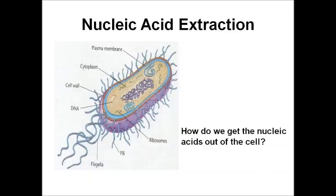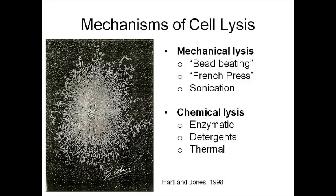Looking at each step in more detail, we start with nucleic acid extraction. The key question is: how do we get nucleic acids out of the cell? They are surrounded by a plasma membrane, and some organisms such as fungi or bacteria also have cell walls. A famous electron micrograph of a lysed E. coli cell shows just how much DNA is packed inside. The main lysis methods fall under two categories: mechanical and chemical.